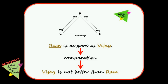When converting between comparative and superlative, the subject and object do not swap. That is, when converting from positive to comparative or superlative, or from comparative to superlative, the subject remains the subject and the object remains the object — they do not interchange.